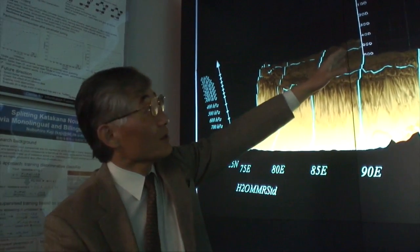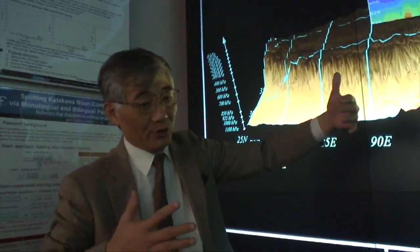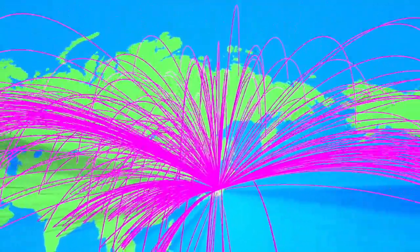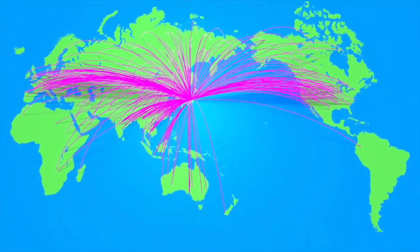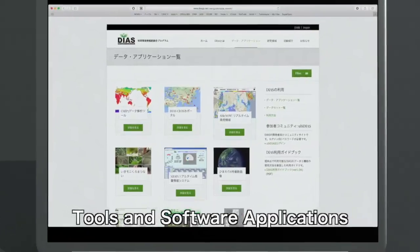DIAS is a state-of-the-art system which combines a large data storage space and computing functions, connecting to the core information network of Japan and also the rest of the world. DIAS offers a number of tools and software applications to assist in analysis and visualization.